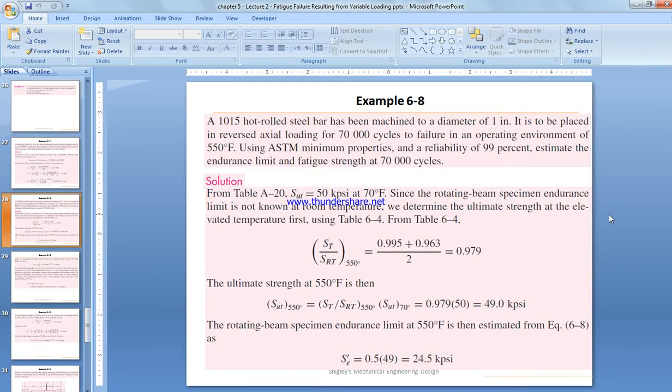Let's do this example. We have a 1015 hot rolled bar that has been machined to a diameter of 1 inch. It is to be placed on reverse axle loading for 70,000 cycles to failure in an operating environment using ASTM minimum properties. Estimate the endurance limit and fatigue strength at 70,000 cycles. In other words, what is the stress applied so that it makes the component last for 70,000 cycles?